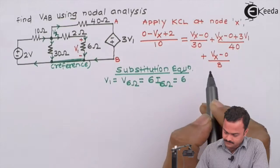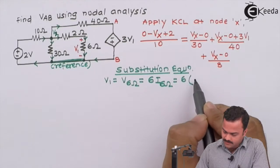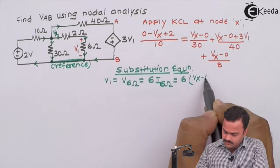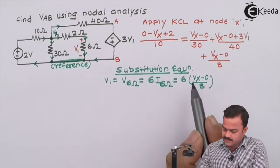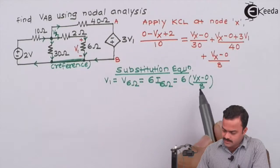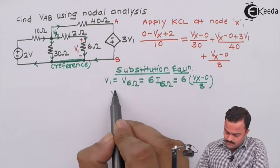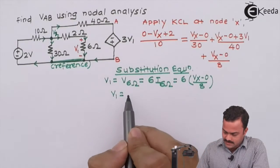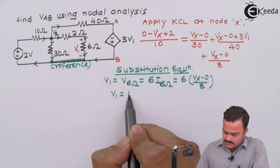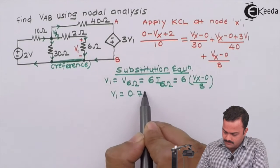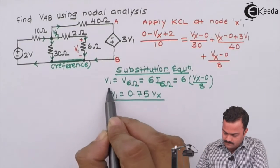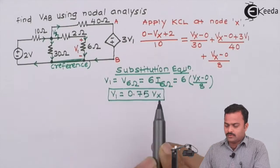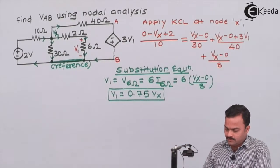So the equation we have already written. So it is 6 multiplied by Vx minus 0 by 8. So basically it is 3 by 4 into Vx. Or we can say it is 0.75 Vx. So we got a substitution for V1.